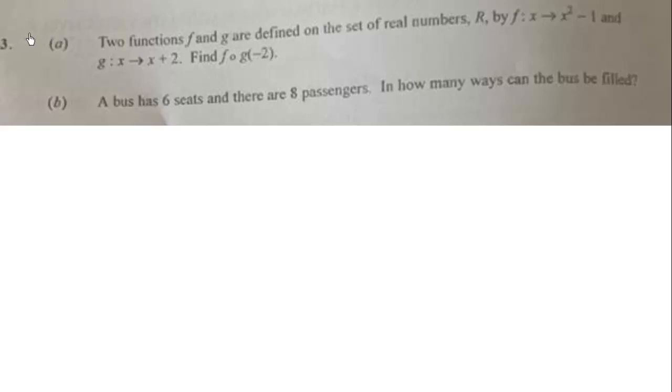WASI 2020 elective mathematics question 3a: Two functions f and g are defined on the set of real numbers R by f such that x maps onto x² - 1 and g such that x maps onto x + 2. Find f∘g(-2).